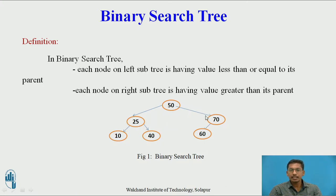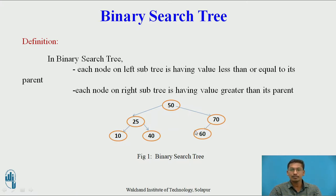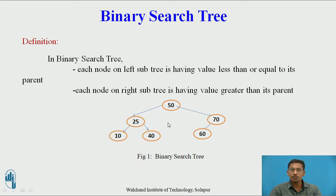Taking the example of 70: 70 is a node, and 60 is having value less than 70, so 60 is present on the left subtree of 70. This is the important property of binary search tree: all the nodes having value less than the root are present on the left subtree, and all values greater than the root are present on the right subtree.